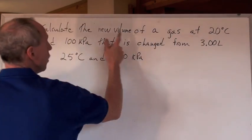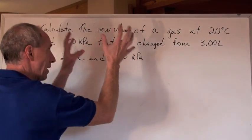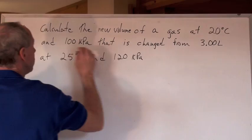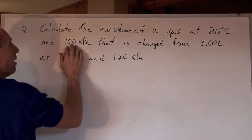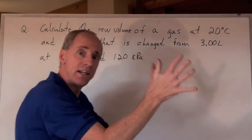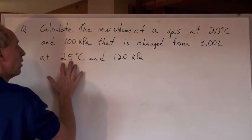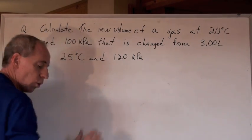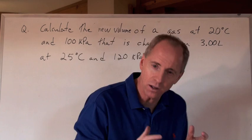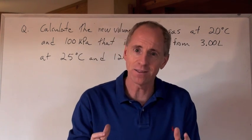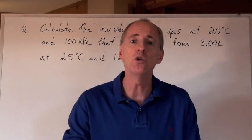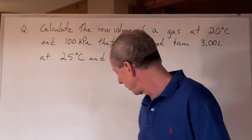Calculate the new volume of a gas, and that gas is at 20 degrees Celsius and 100 kPa, and it's changed from an initial condition of being 3 liters in size, and 25 degrees Celsius, and 120 kPa. Man, there's a lot of numbers there. There's a lot of things to plug into somewhere. What am I going to do? What formula am I going to use?